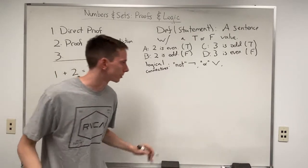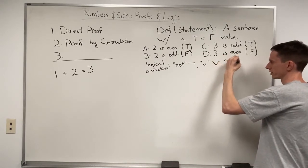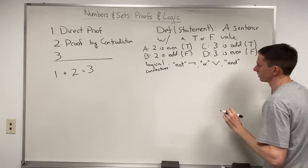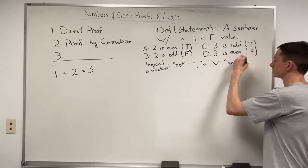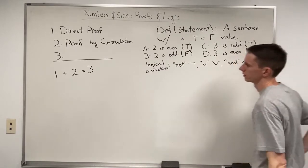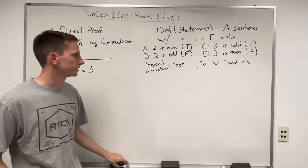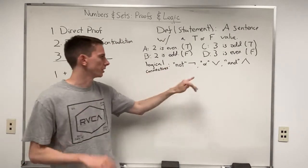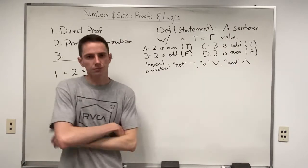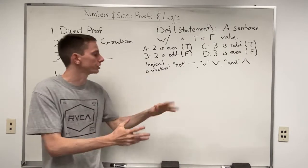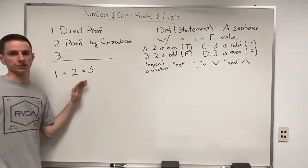The last elementary logical connective is AND. AND looks like just the opposite of OR — kind of like an up arrow, written A∧B. These logical connectives are the building blocks, and we can make more complicated ones out of these three. They are the equivalent of plus, minus, multiply, and divide when it comes to basic numbers.